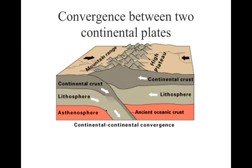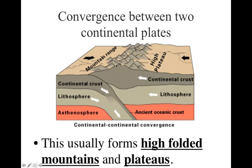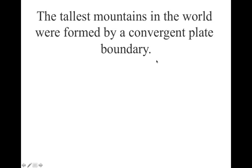Our last convergent boundary type is between two continental crusts. In this case we don't necessarily have subduction. A lot of times what happens is they just both get pushed up and we get what are called folded mountains — high folded mountains that get pushed up — and usually a plateau, which is a high flat area.